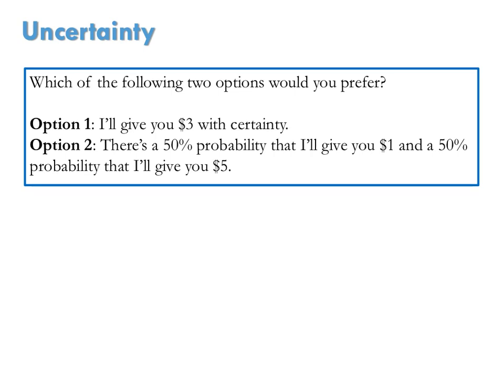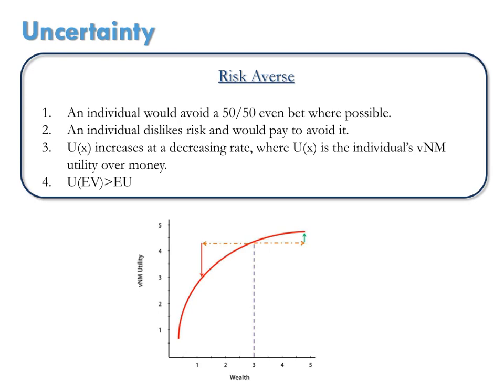Which option you picked reveals something about your own preferences for risk. If you picked option 1, you are most likely risk-averse. Individuals who are risk-averse would avoid a 50-50 bet when possible.